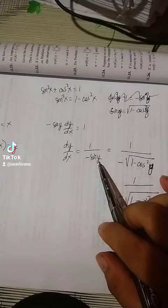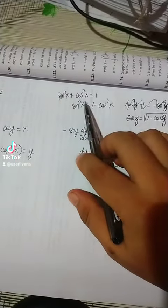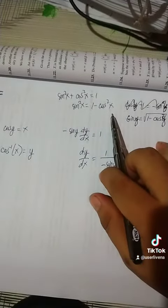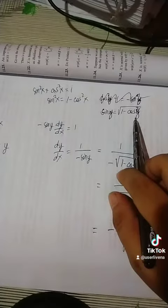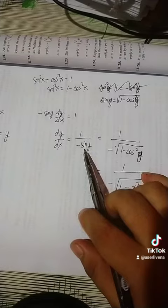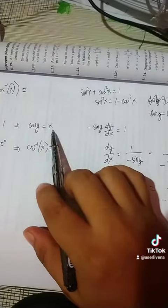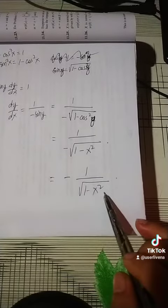We also take note that in the Pythagorean trigonometric identity, sine²(x) plus cosine²(x) equals 1. Therefore sine²(y) equals 1 minus cosine²(y), and sine(y) equals the square root of 1 minus cosine²(y). So 1 over negative sine(y) is equivalent to 1 over the square root of 1 minus cosine²(y). Since cosine(y) equals x, cosine²(y) equals x², giving us the square root of 1 minus x².